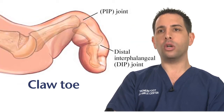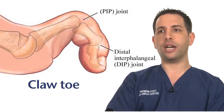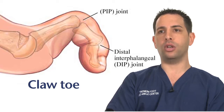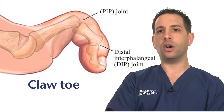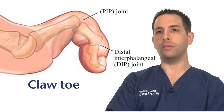A claw toe results when there is a flexion contracture at both joints within the toe. This leads to prominence of both joints and can also lead to pressure at the tip of the toe.